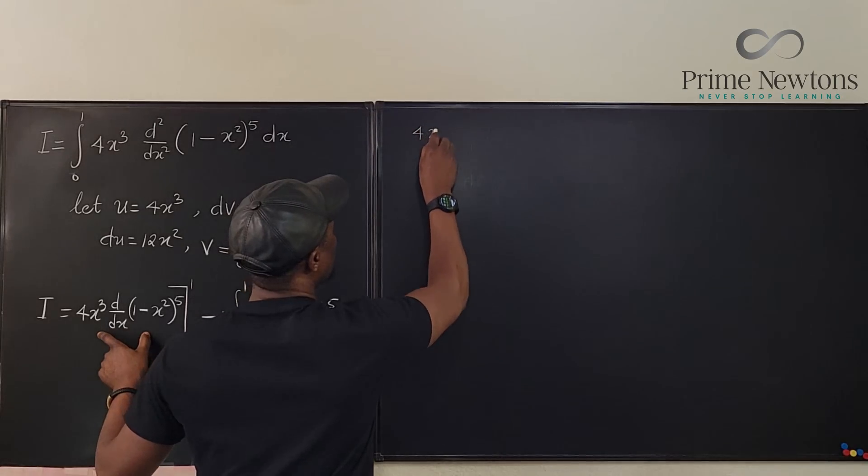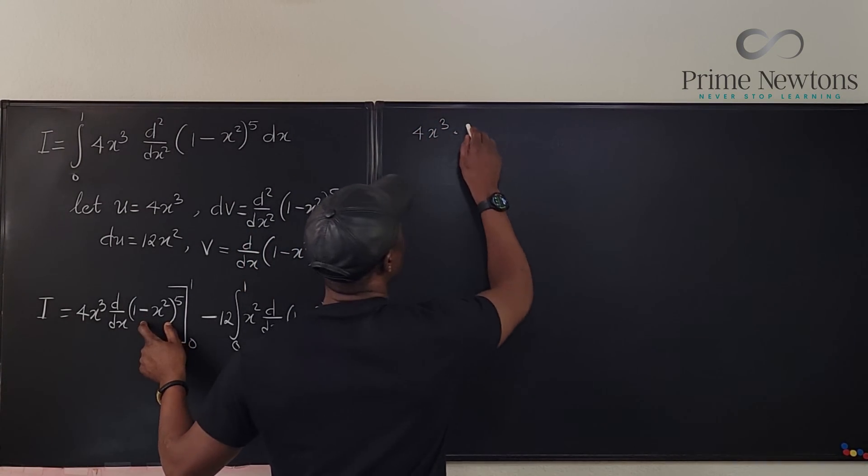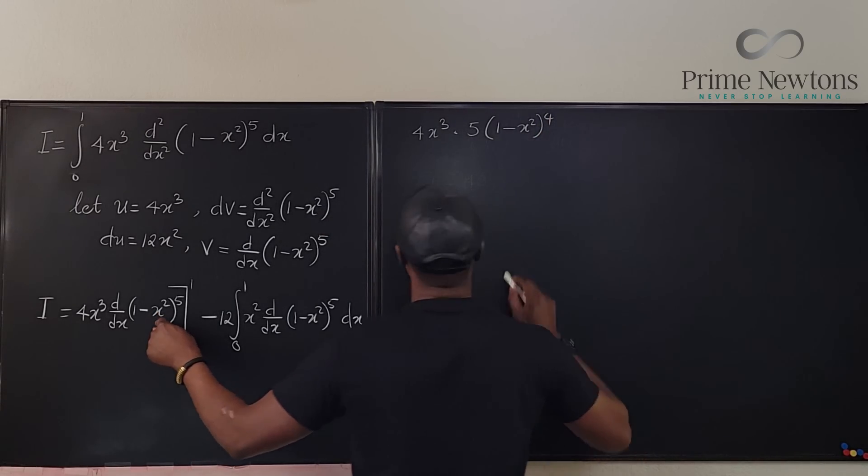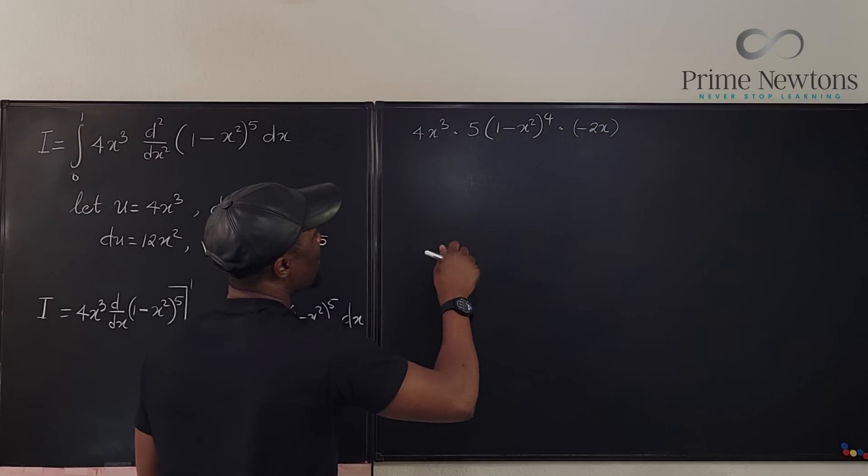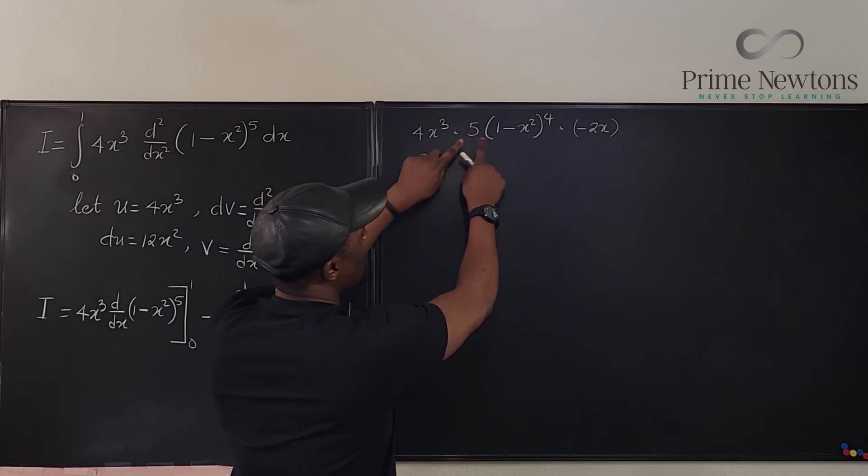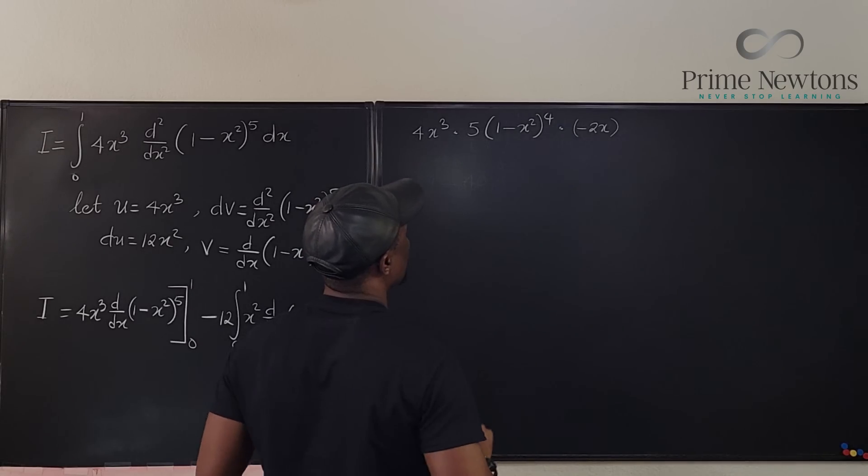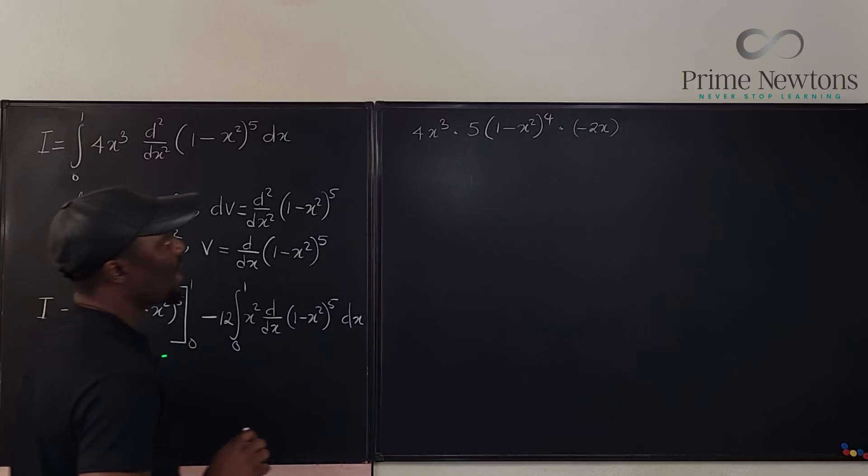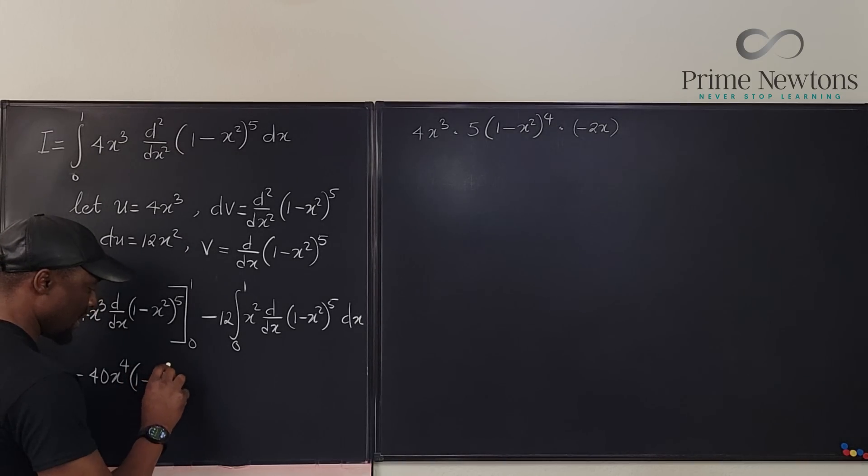Let's take care of this first. We know that 4x cubed multiplied by the derivative of this is going to be applying the chain rule it's going to be 5 times 1 minus x squared to the fourth multiplied by the derivative of the inside which is negative 2x. If we multiply this out we're going to end up with 4 times 5 is 20 times negative 2 is negative 40x to the fourth.